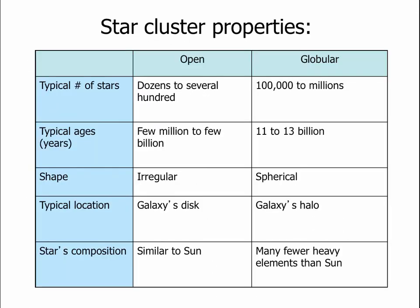To summarize the properties of star clusters: open clusters typically have a few dozen to a few hundred stars, occasionally a thousand or two. Their ages range from a few million to a few billion years. They are irregular in shape and are usually found in the band of the Milky Way. The composition of stars in open clusters is very similar to the Sun — about 75% hydrogen, 73% helium, and 2% everything else.